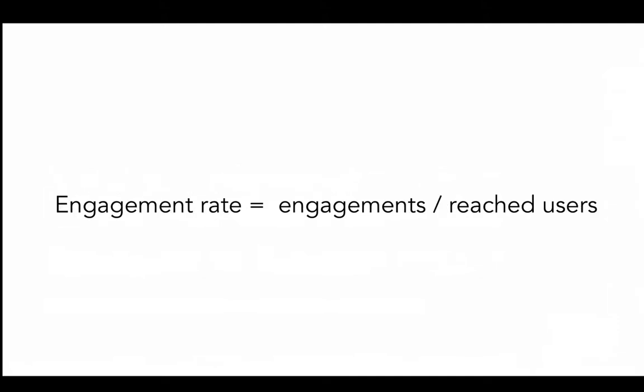The best way to compare posts by engagement is to find the engagement rate, and that is the number of people who have engaged versus those who have been reached. So if you think about yourself in the feed, you might be scrolling along on your phone and you see a post — you're automatically now counted as a reached user. You might then like, comment on the photo or video, or share it. Each one of those is counted as an engagement.